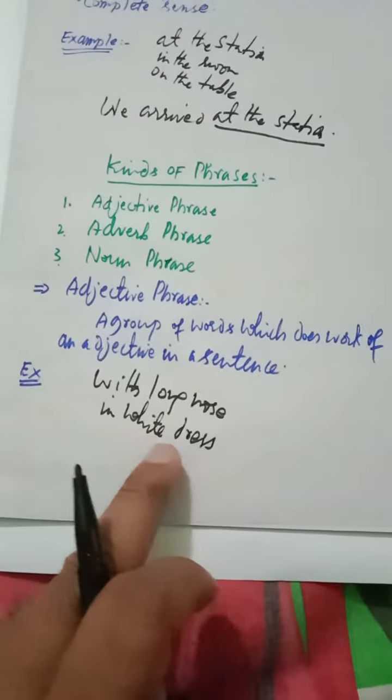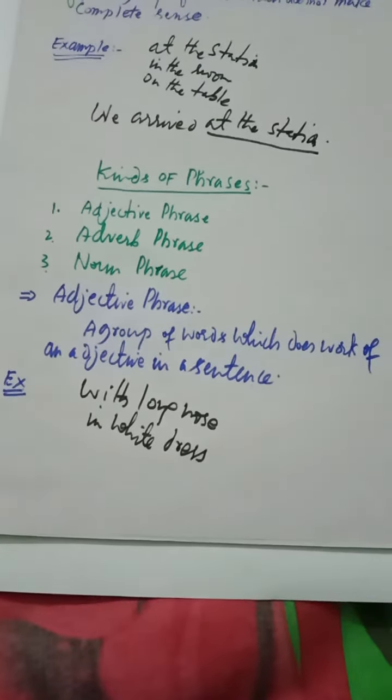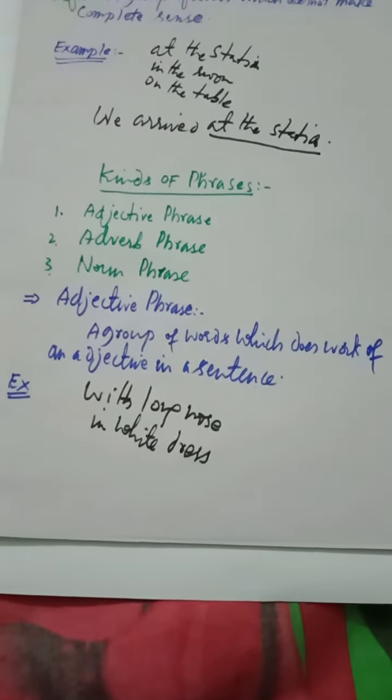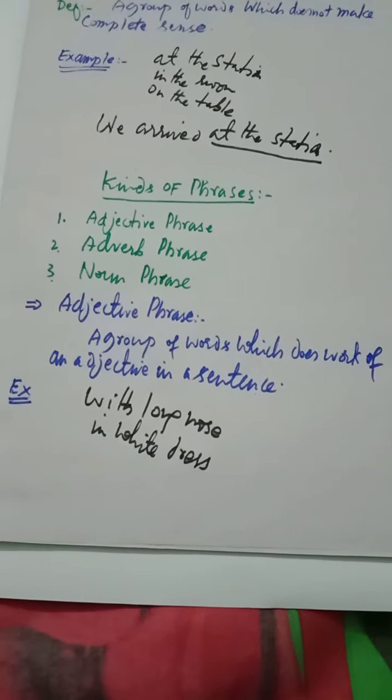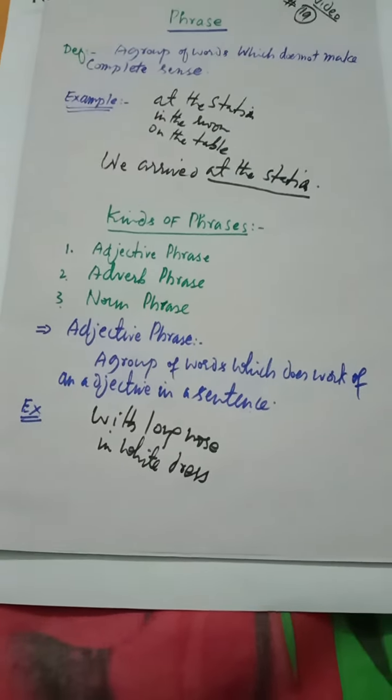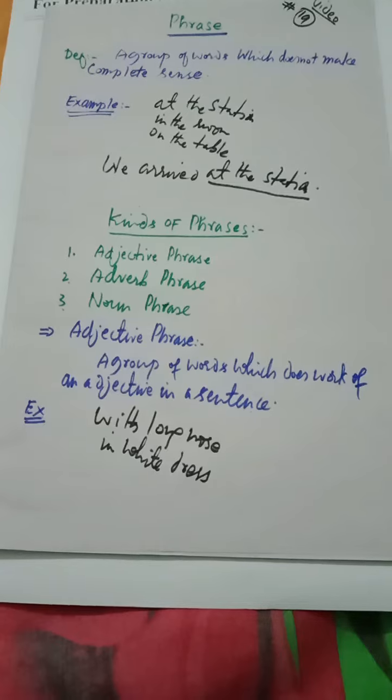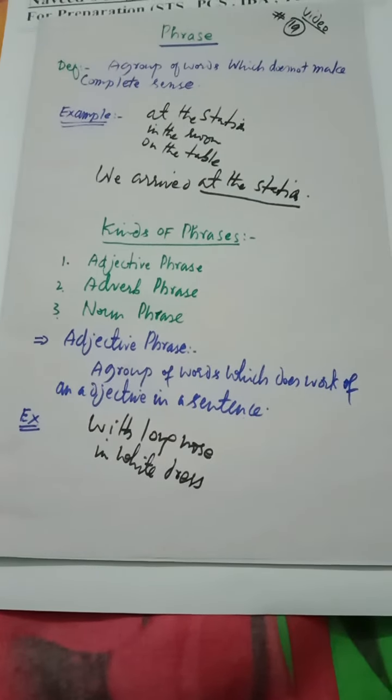And white is an adjective which qualifies the noun dress. So we can say I saw a man with long nose in the street and I saw a constable in white dress on the road. These are examples of adjective phrases. We will discuss in the next lecture the remaining two kinds: adverb phrase and noun phrase.